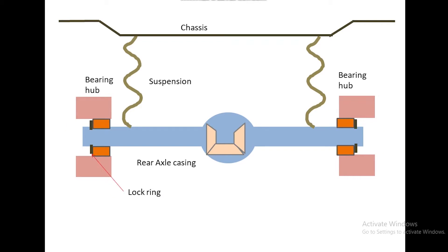Stub axle having spline connection with sun gear and hub, therefore it transmits torque from sun gear to hub and finally to wheel.